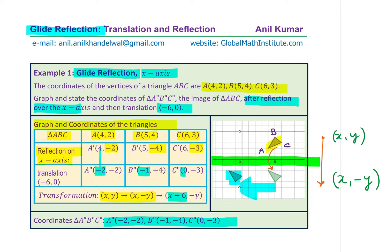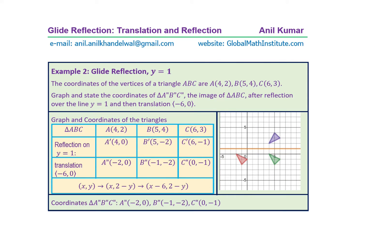We did the reflection on the x-axis. Now here is another interesting case. We are still reflecting the triangle vertically, but this time we are going to reflect it on the line y equals 1. Example 2: glide reflection of a triangle on the horizontal line y equals 1. The coordinates of the vertices of triangle ABC are A(4,2), B(5,4), and C(6,3). Graph and state the coordinates of the image after reflection on y equals 1, and then translate 6 units left.